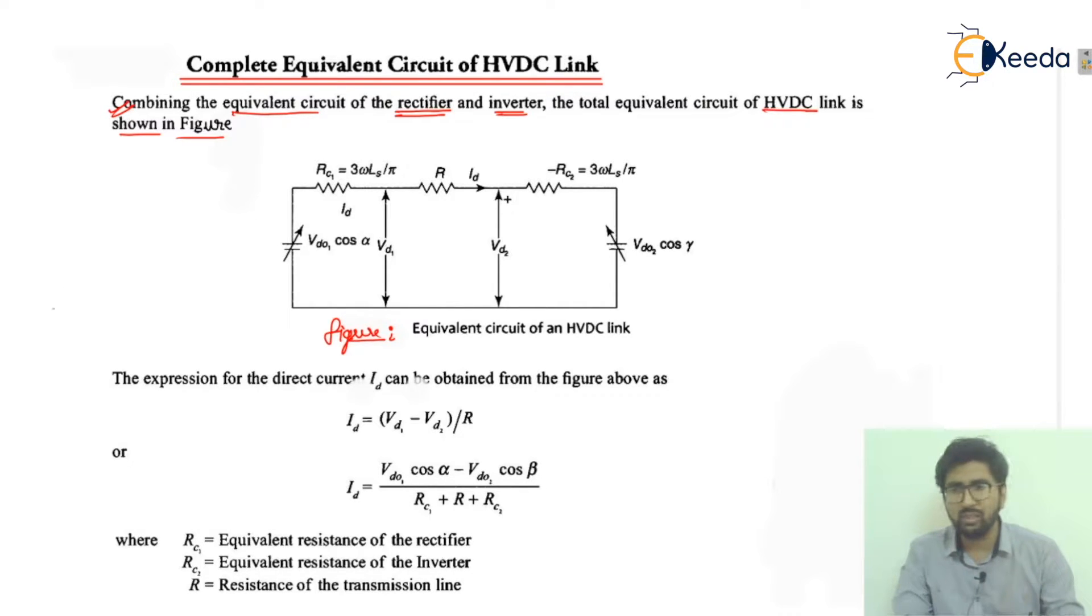We are combining the equivalent circuit of rectifier, whatever we have discussed, and the inverter. We are combining both of them so we will have the total equivalent circuit of HVDC link, which is from rectifier to inverter.